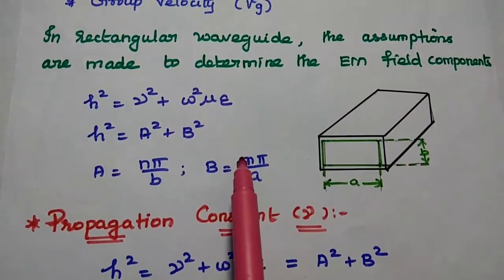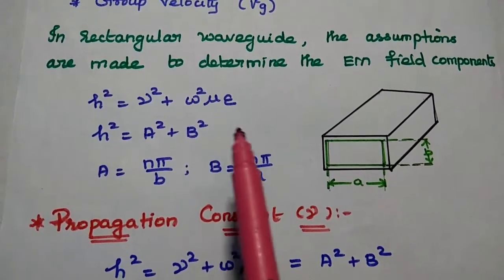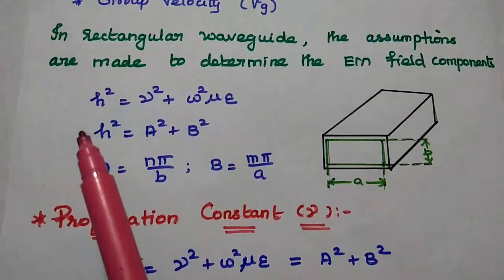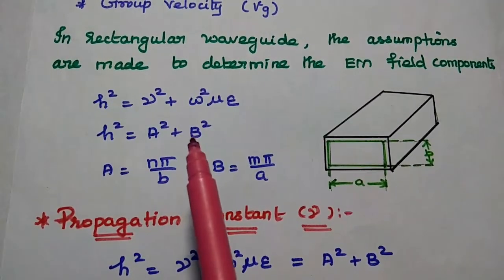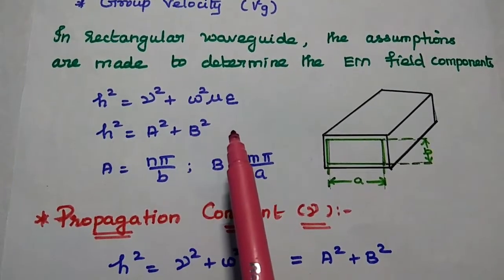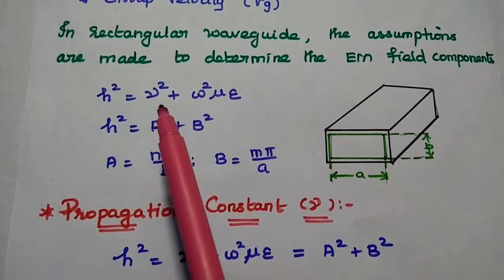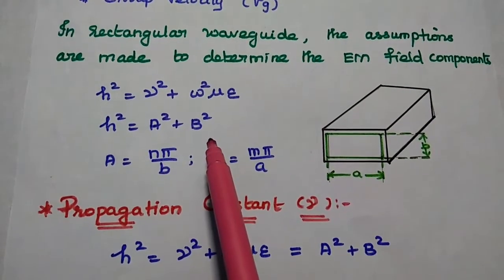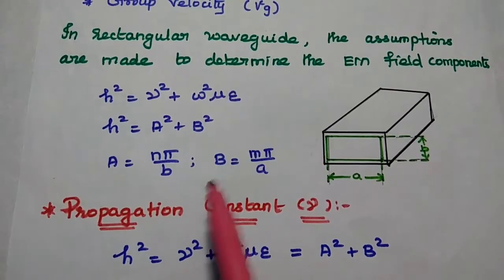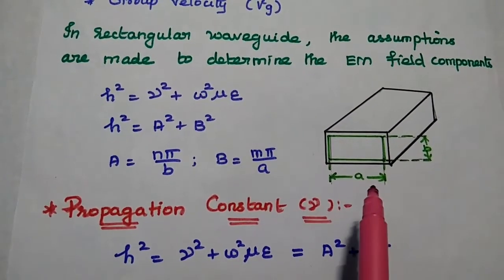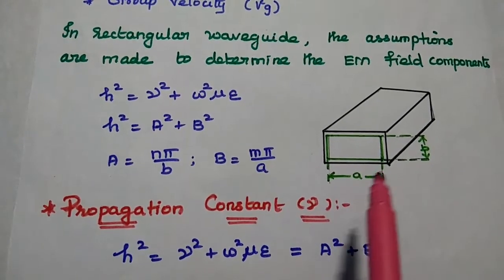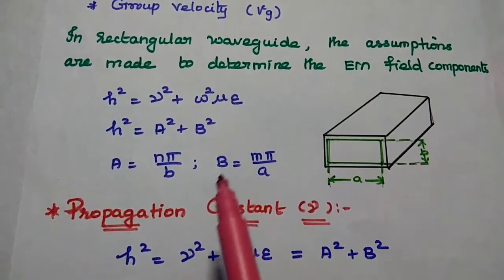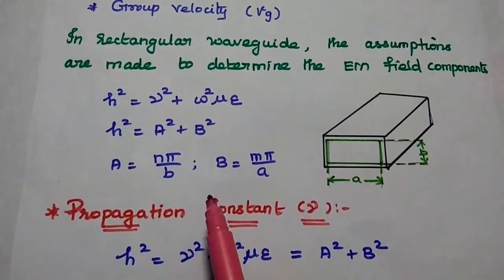We have already derived the electromagnetic field configurations for this rectangular waveguide in the previous lecture video. In that, we assumed one value that is h squared. In order to determine the electromagnetic field configurations in a rectangular waveguide, we need to make an assumption: h squared is equal to gamma squared plus omega squared mu epsilon, which is also equal to a squared plus b squared. Here, a is n pi by b, and b is equal to m pi by a. Here, a represents the width and b represents the height of the rectangular waveguide. n and m both represent integer values and also define the mode value.